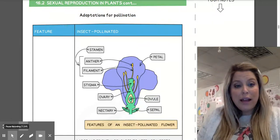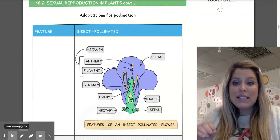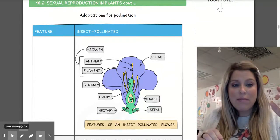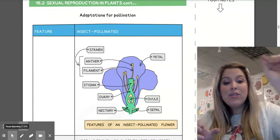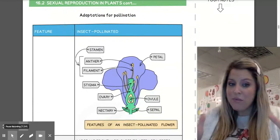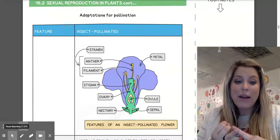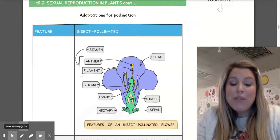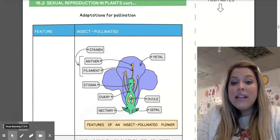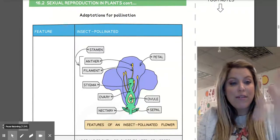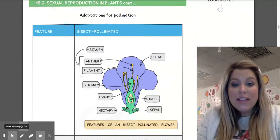So the male portion of the flower, that stamen that has the anther and the filament, will have pollen grains on it that need to make their way in some form, either by insect or by wind, to the stigma, which is the female portion of the flower that leads down into the ovary where we have the ovule that's waiting for the pollen grain to make its way to it.